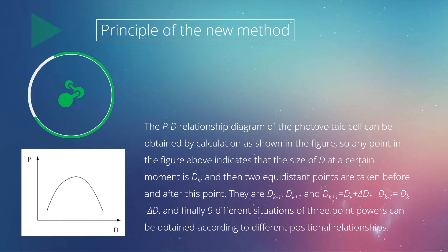The P-E relationship picture of the photovoltaic cell can be obtained by calculations. Any point in the figure indicates the size of D at a certain moment. Two equidistant points are taken before and after this point: dk-1 and dk+1, where dk+1 equals dk plus theta_d, and dk-1 equals dk minus theta_d. Nine different situations of three-point positions can be obtained according to their different positional relationships.